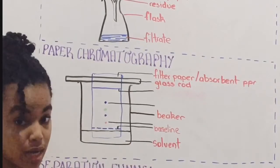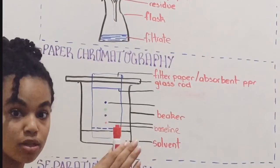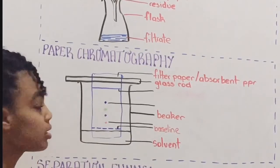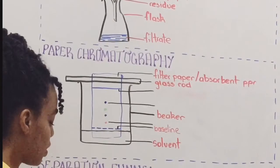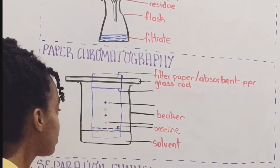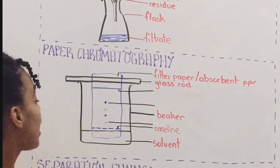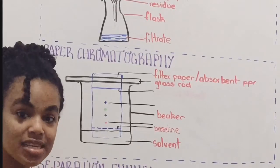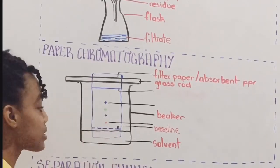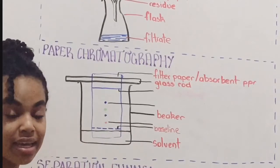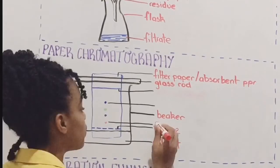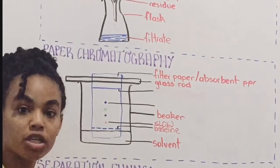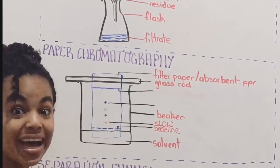As the solvent rises up the absorbent paper, it is going to carry the solute along with it. And as it carries the solute, the different solutes in the solution are going to be separated. You can see I have a red dot here. That would mean that this solute in the ink has a stronger attraction to the absorbent paper or is less soluble in the solvent. So we say that the one that's closest to the baseline is the slowest moving dye in this solution. So we call this slow.